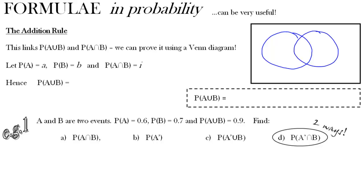To prove the addition rule, this links the union of two events and the intersection. I'm going to use this Venn diagram to do so. We'll use little a and little b to represent the probabilities of events A and B, and represent the intersection with the letter i. That means we can put an i there on the diagram. The whole of A is little a, so this bit here must be little a minus the intersection. And in the same way, we can write that this area is little b minus i.